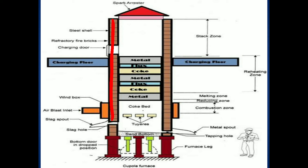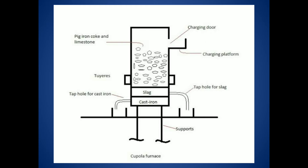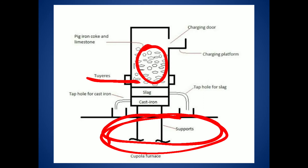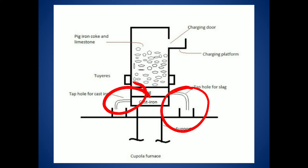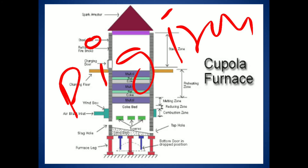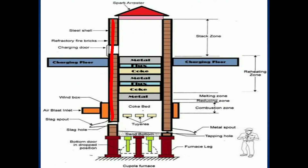Coming to the operation: to start a cupola furnace, initially coke is first lit at the bottom. By using the spark arrester, we light the coke at the bottom. This initial coke bed is for heating purposes.